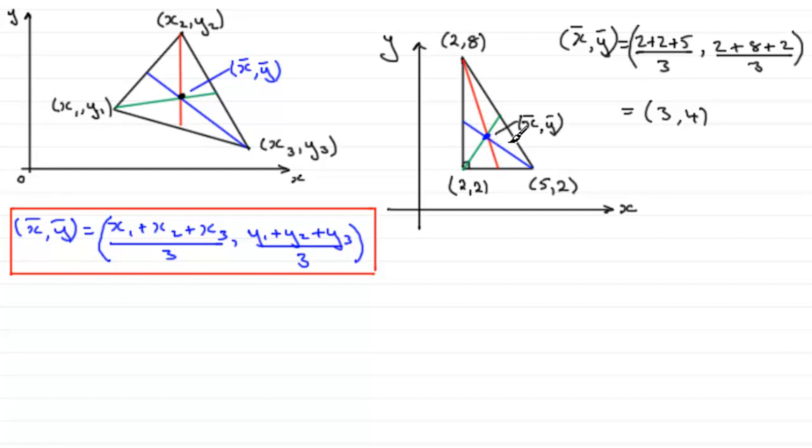Now sometimes, you'll just get given a shape. Maybe something like this. If we've got this uniform triangular lamina with these dimensions, we've got to find the centre of mass. Where is it going to be? Well, what we could do is set up some axes, first of all.